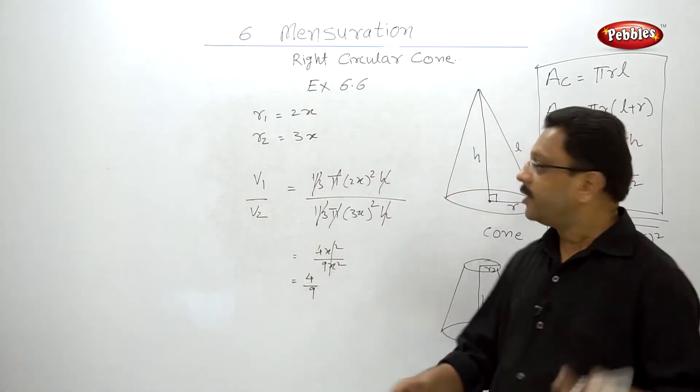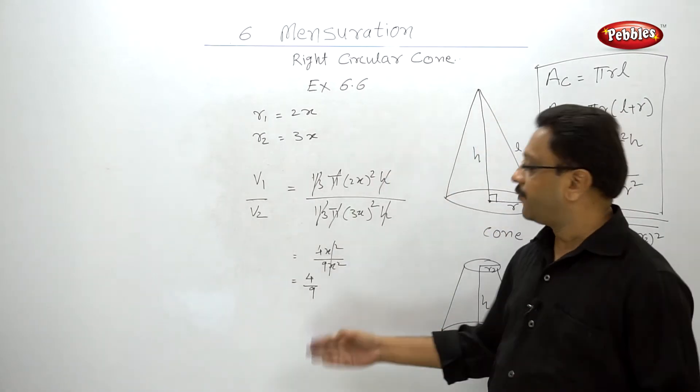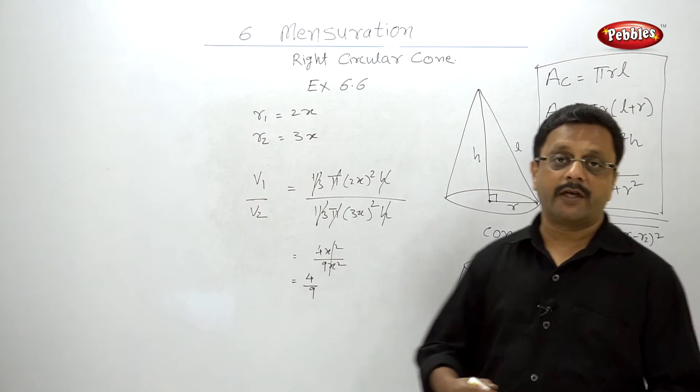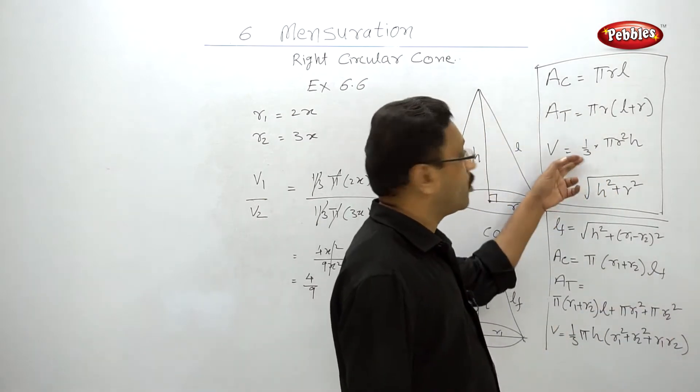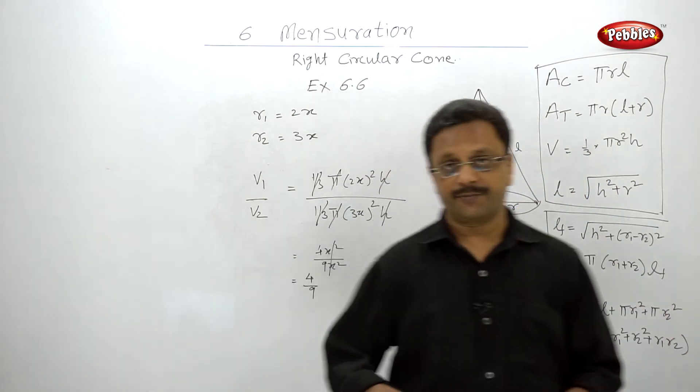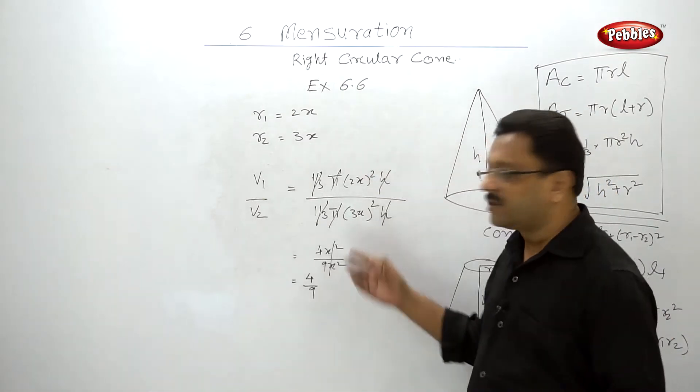So the volumes of those cones are in the ratio 4:9. We already solved this kind of example while solving the examples for cones, so this is very simple.